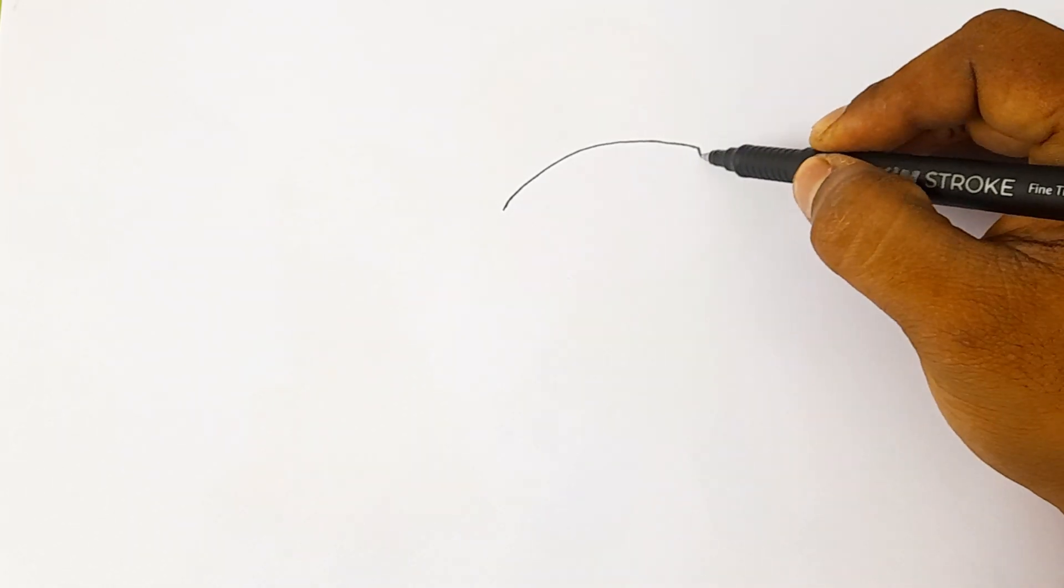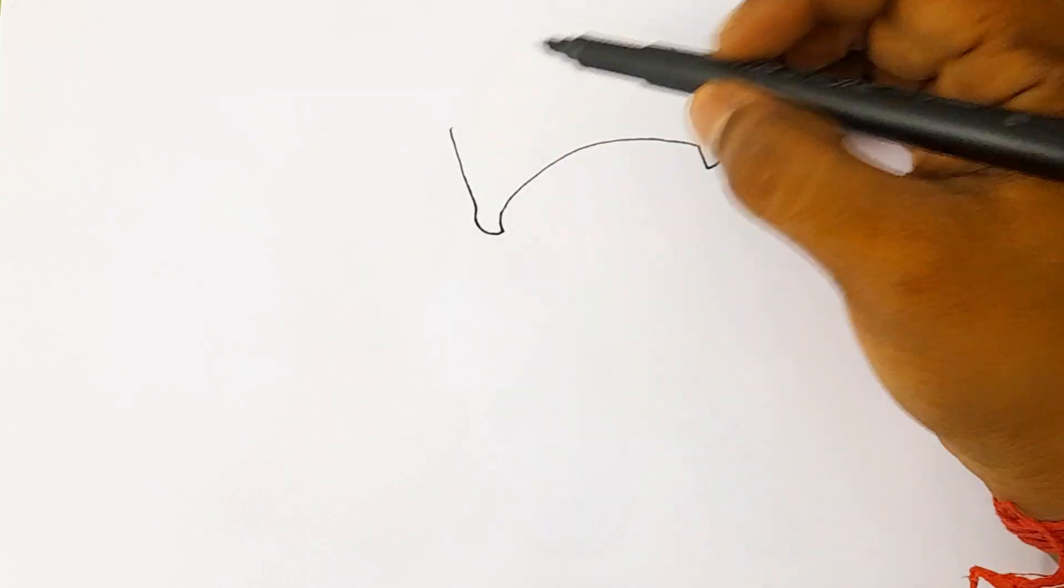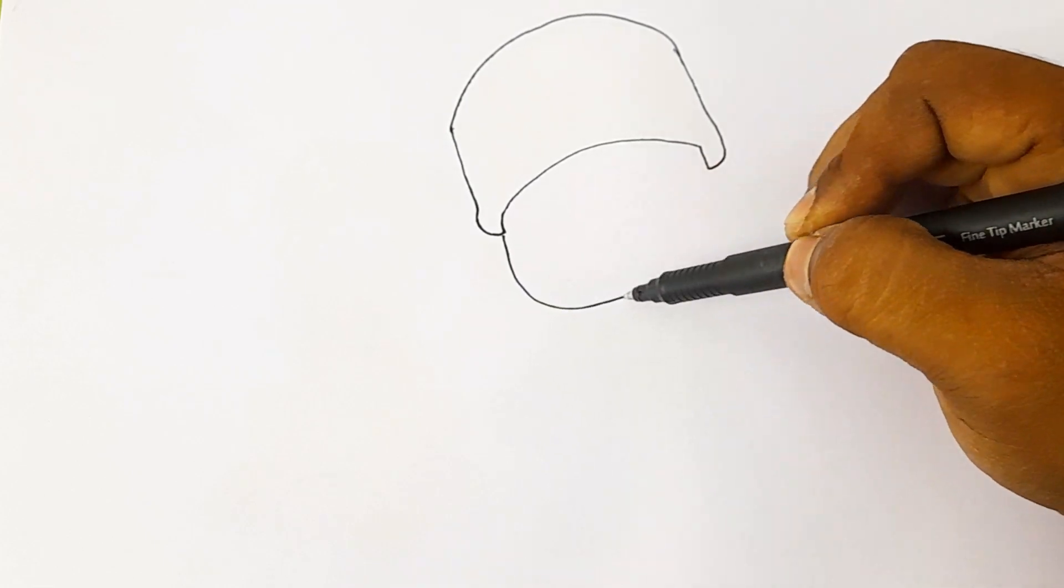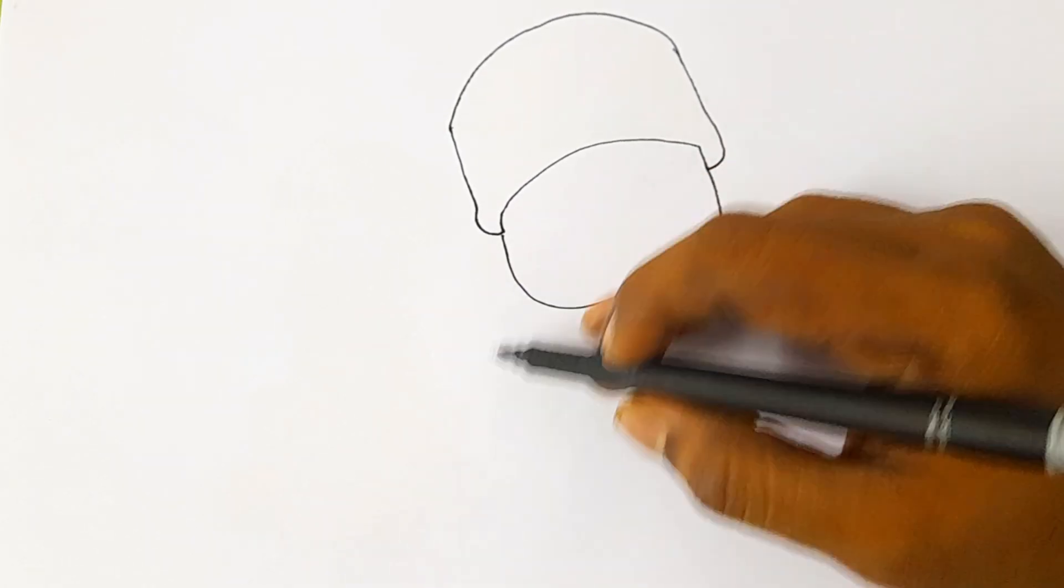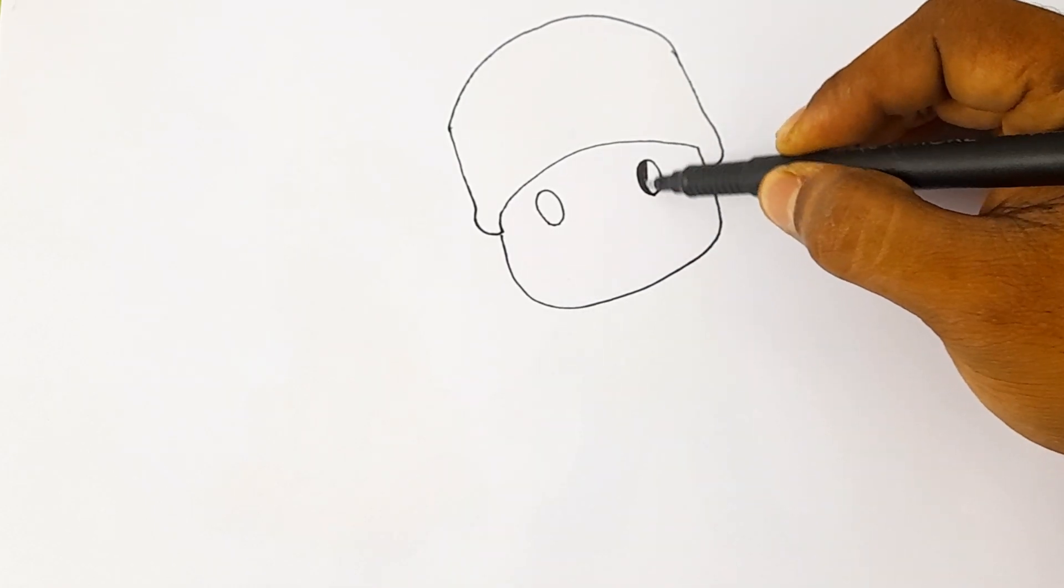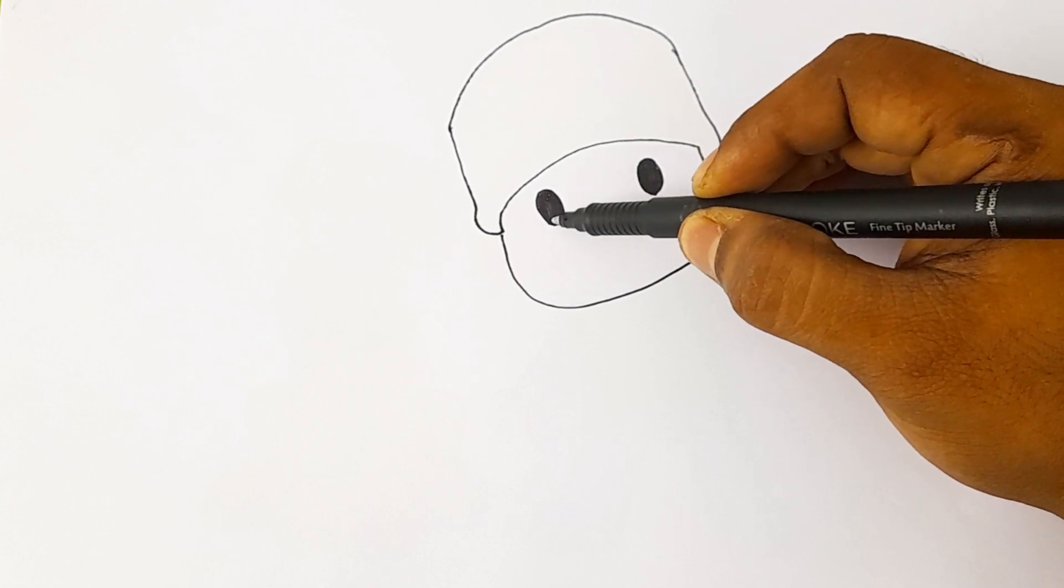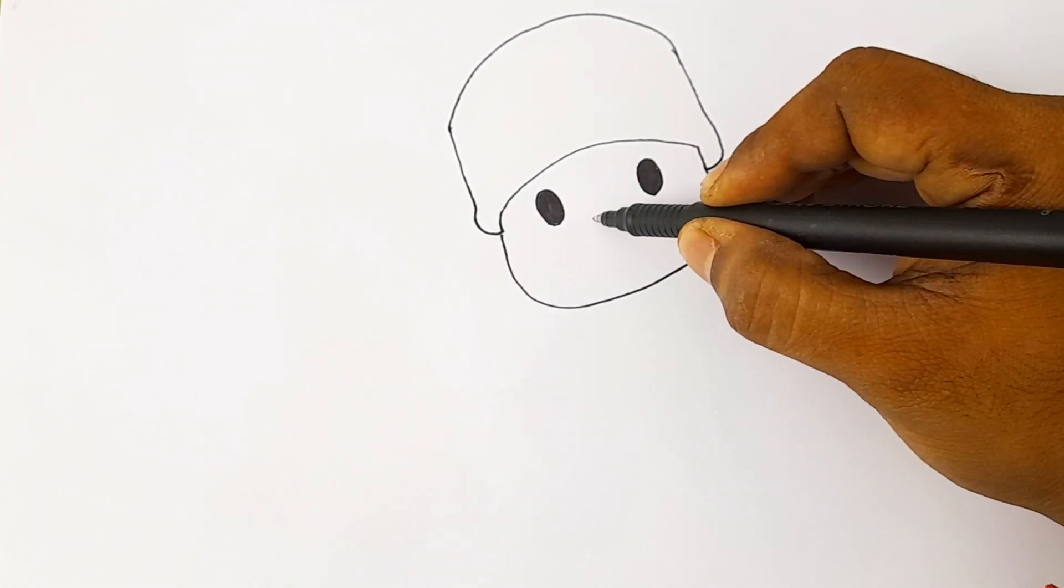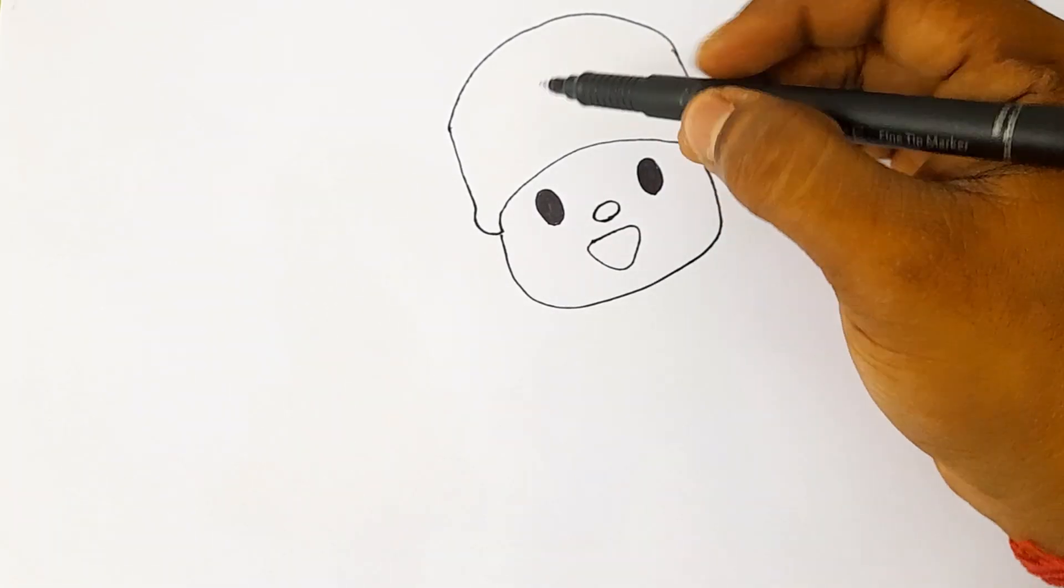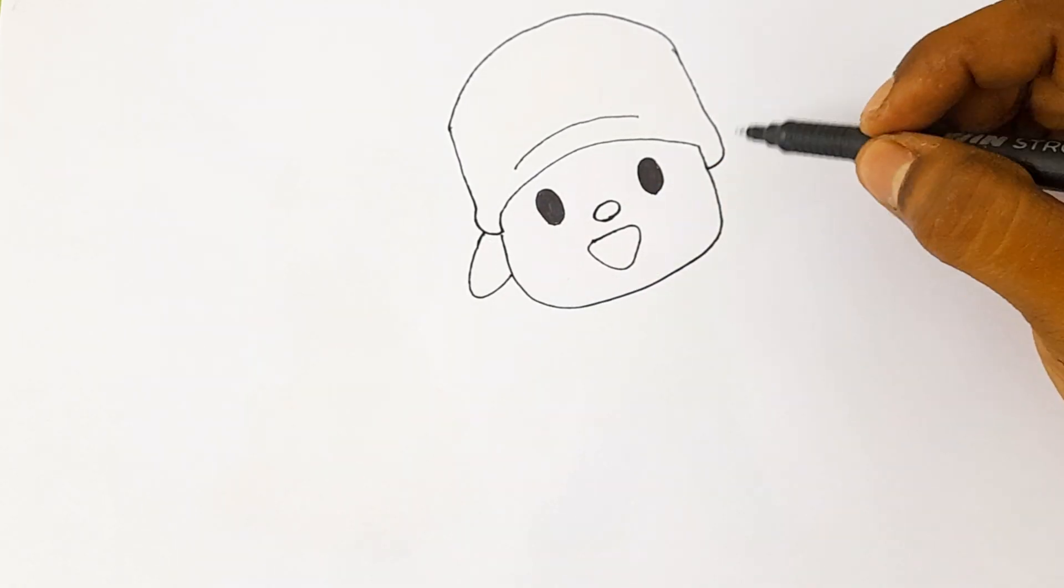First we will take a black marker for the drawing. Now we will draw the Pocoyo face. Always remember, drawing and painting slowly, otherwise your drawing will be wrong. Now we will draw the Pocoyo mouth. It's time to draw the Pocoyo hat.